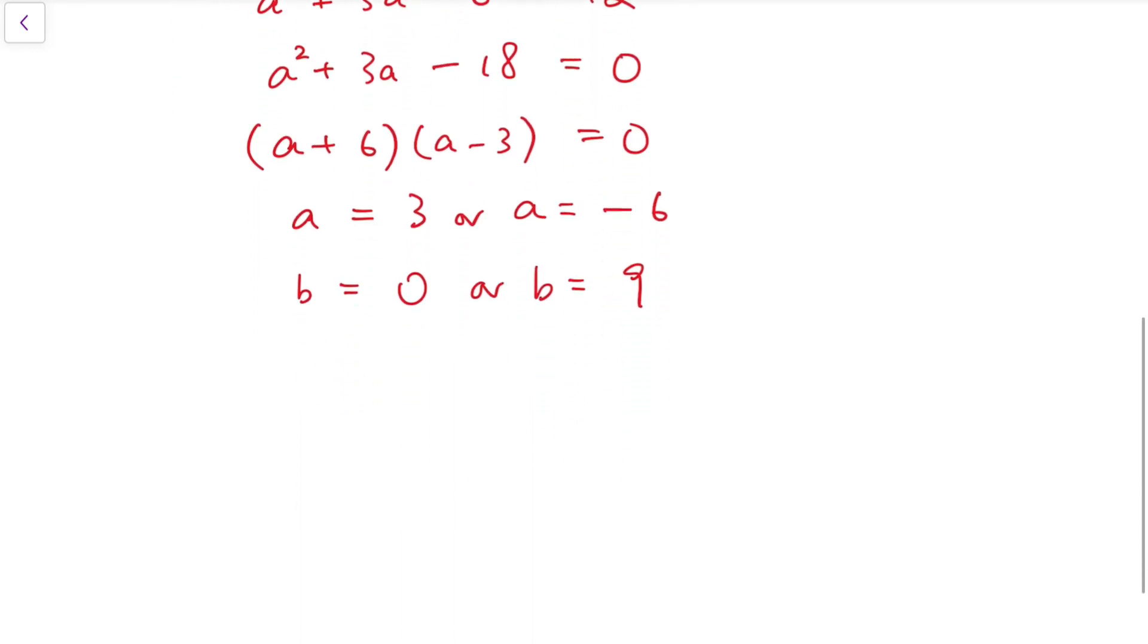So now, we have two systems. One is that for real numbers x and y, the sum is 3 and the product is 0. For the other system, the sum is -6 and the product is 9.